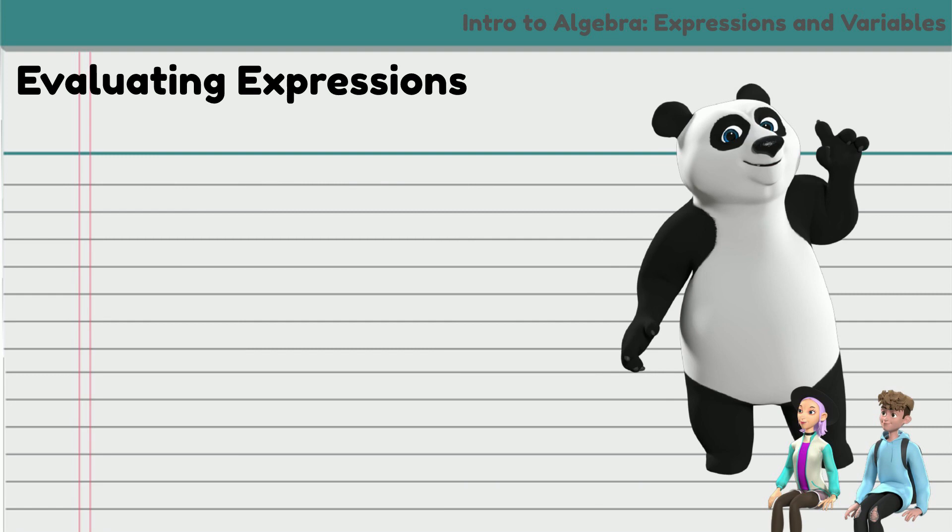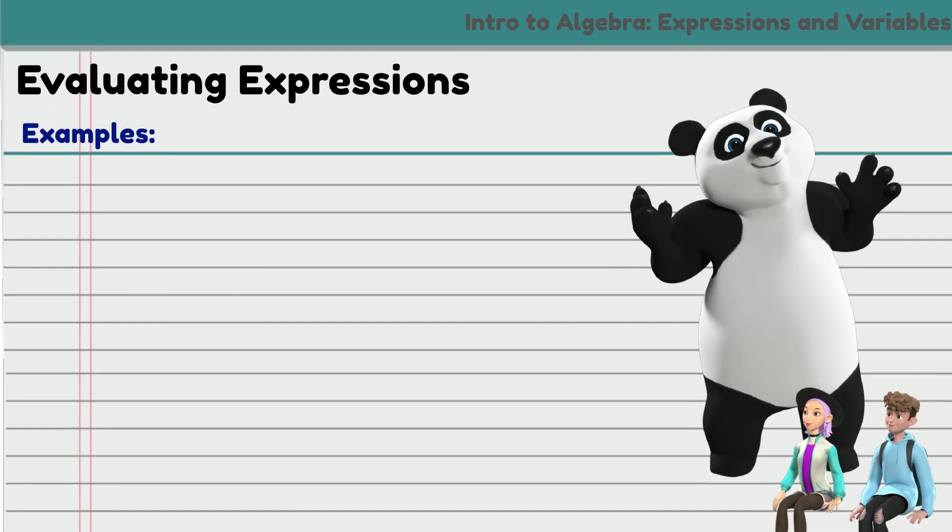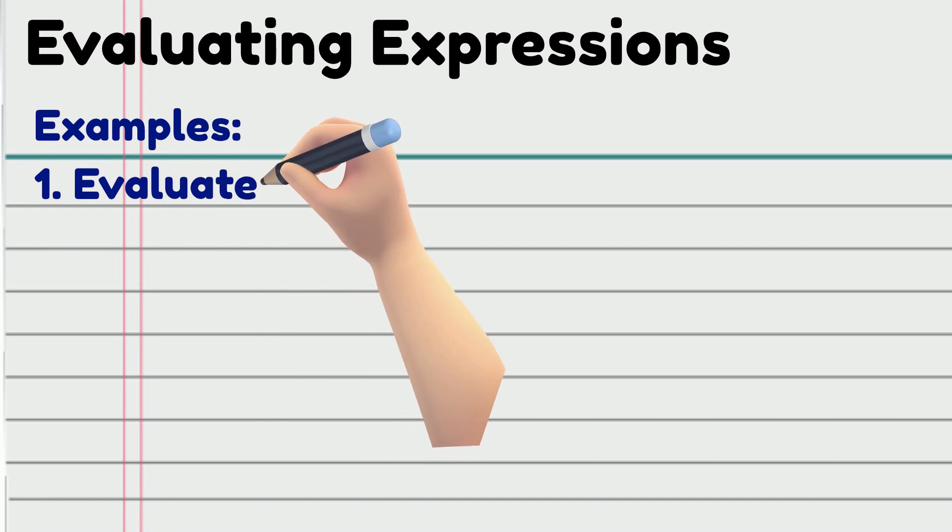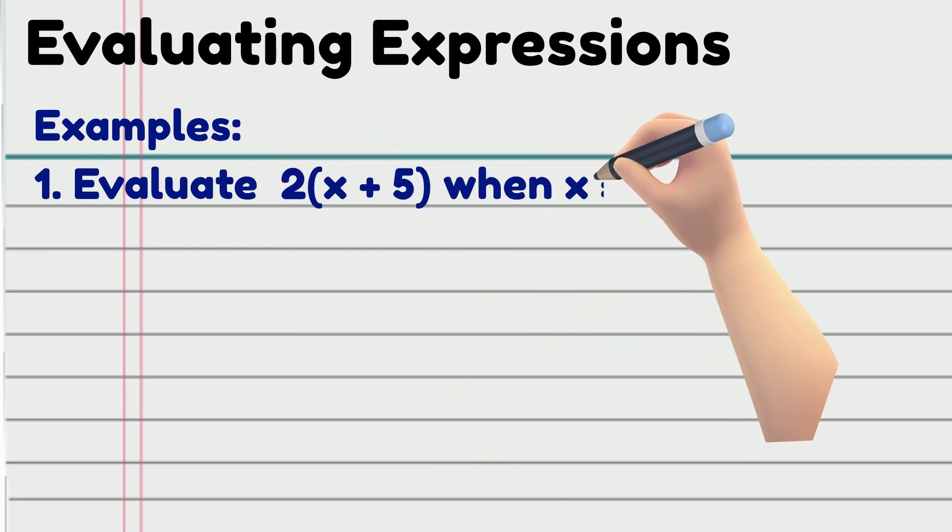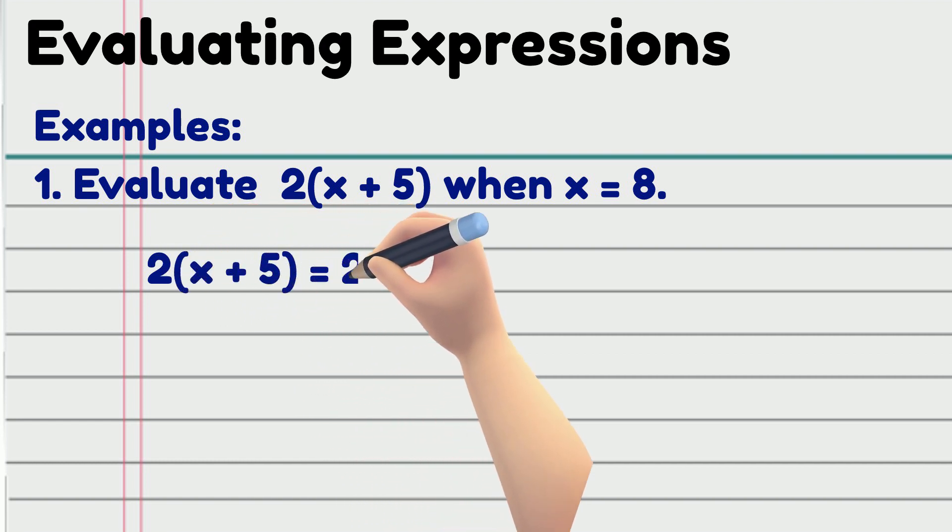Now, let's evaluate expressions, following the order of operations rule. Example number 1. Evaluate 2 times the quantity x plus 5, when x equals 8. First, substitute x with 8, or others also say, plug in the value of x. 2 times the quantity x plus 5 becomes 2 times the quantity 8 plus 5. Then, perform the operation.